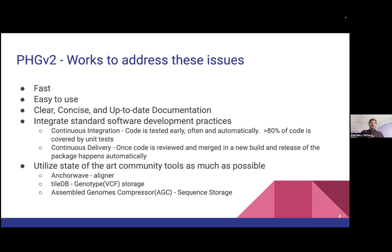Since we started in 2017, new tools have emerged that have become community standards. In particular, AnchorWave — created initially in our lab — uses an alignment approach that does really well at aligning assemblies against each other. We use TileDB for genotype storage, typically stored in a VCF-like file. And we found AGC, or Assembled Genomes Compressor, which stores FASTA sequences in a very compact and efficiently queryable data structure. We try to leverage all three of these tools to make this as useful as possible.